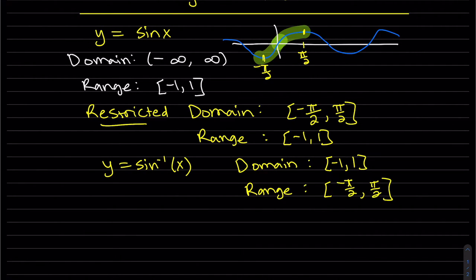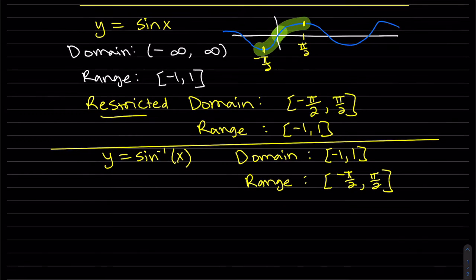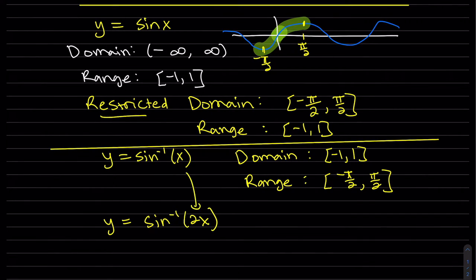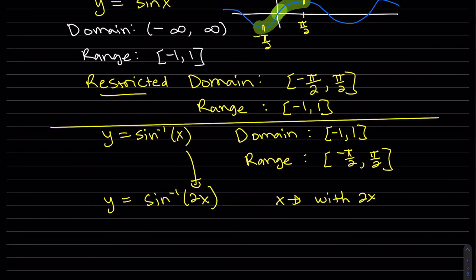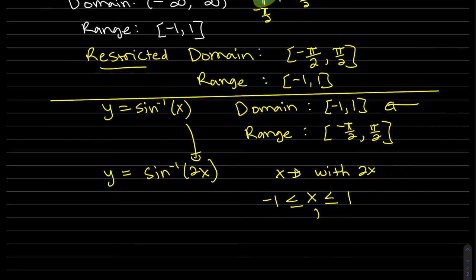Okay, so that's not quite the function we have for y equals sine inverse of 2x. What's different is that x gets replaced with 2x. So the thing that it's going to affect is the domain. We have x between minus 1 and 1, but x gets replaced with 2x.